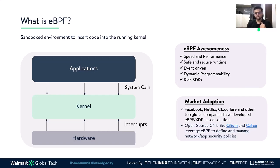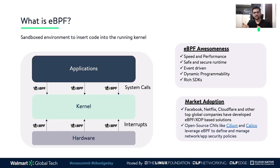eBPF presents a new model which allows us to extend the kernel functionality through simple programs. These programs can be associated with desired kernel events so they are executed whenever the event happens. For example, we can run an eBPF program when a packet arrives at the NIC or when an application makes a system call to the kernel. In a way, eBPF programs are to the kernel what plugins are to proxy or web servers.